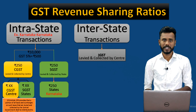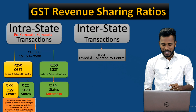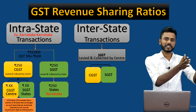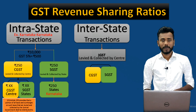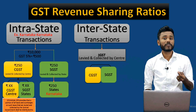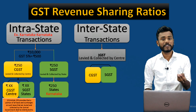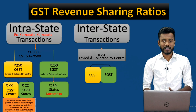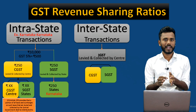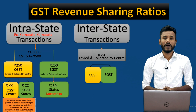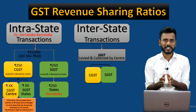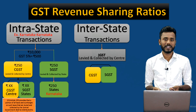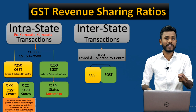On this IGST, the center is going to distribute the taxes between the states as well as retain a portion for the center. But the key question here is: which state is going to be benefited from this IGST? On interstate transactions, IGST is initially levied and collected by the central government, and then the center distributes the revenue with the states — but which state gets benefited?